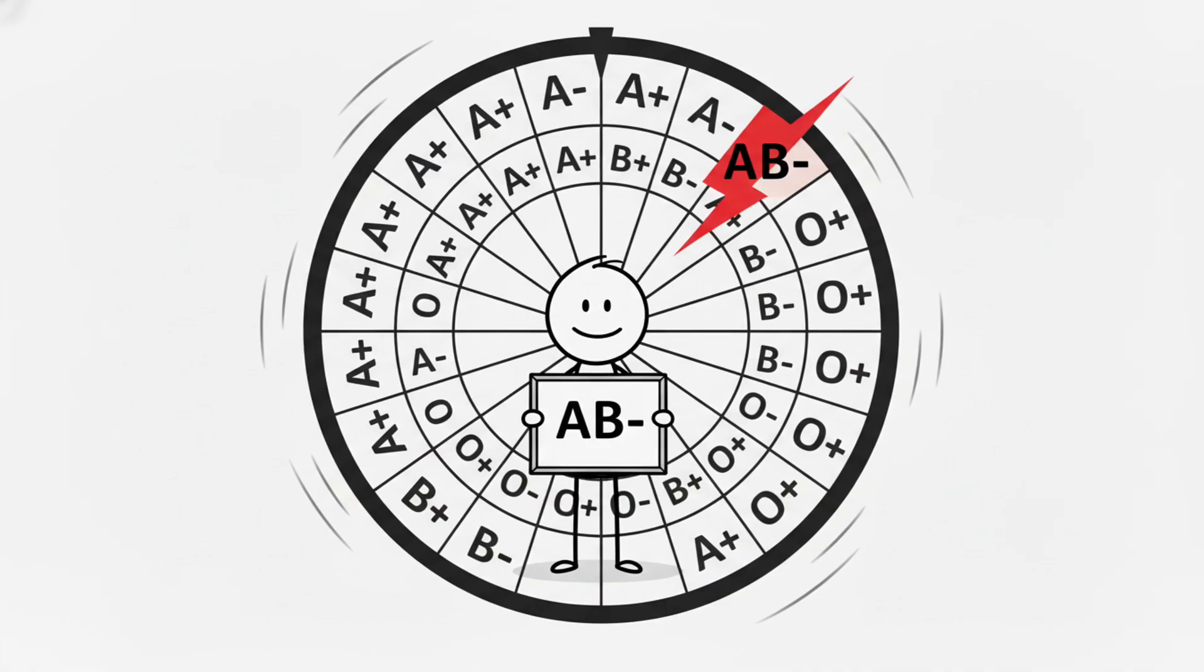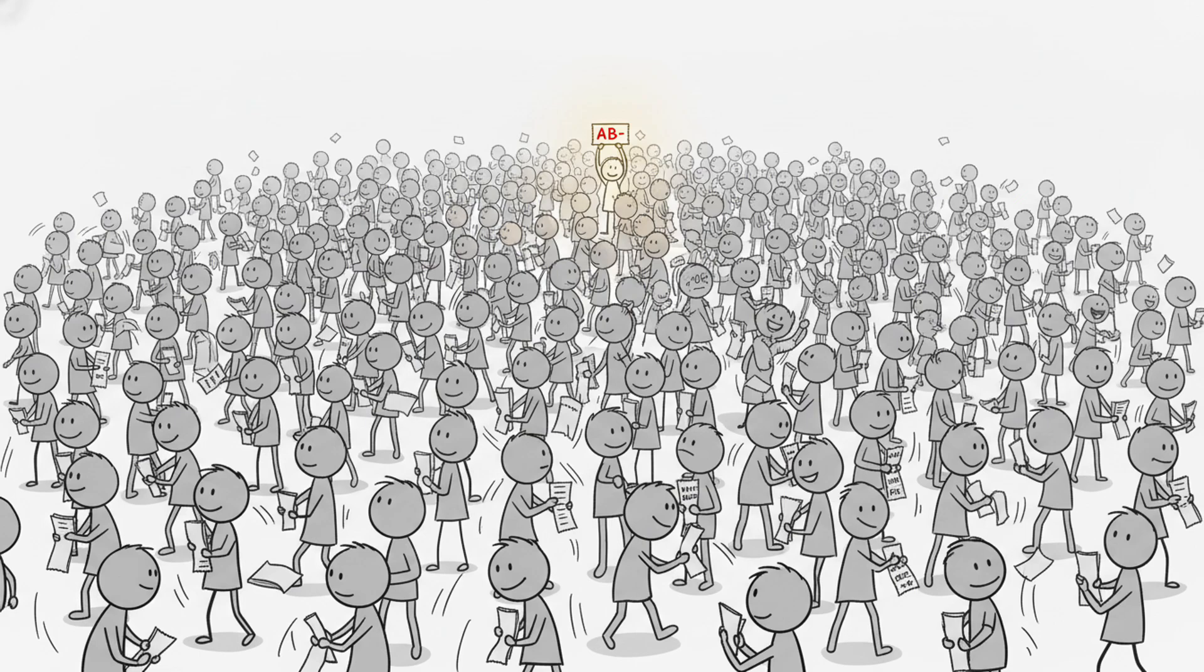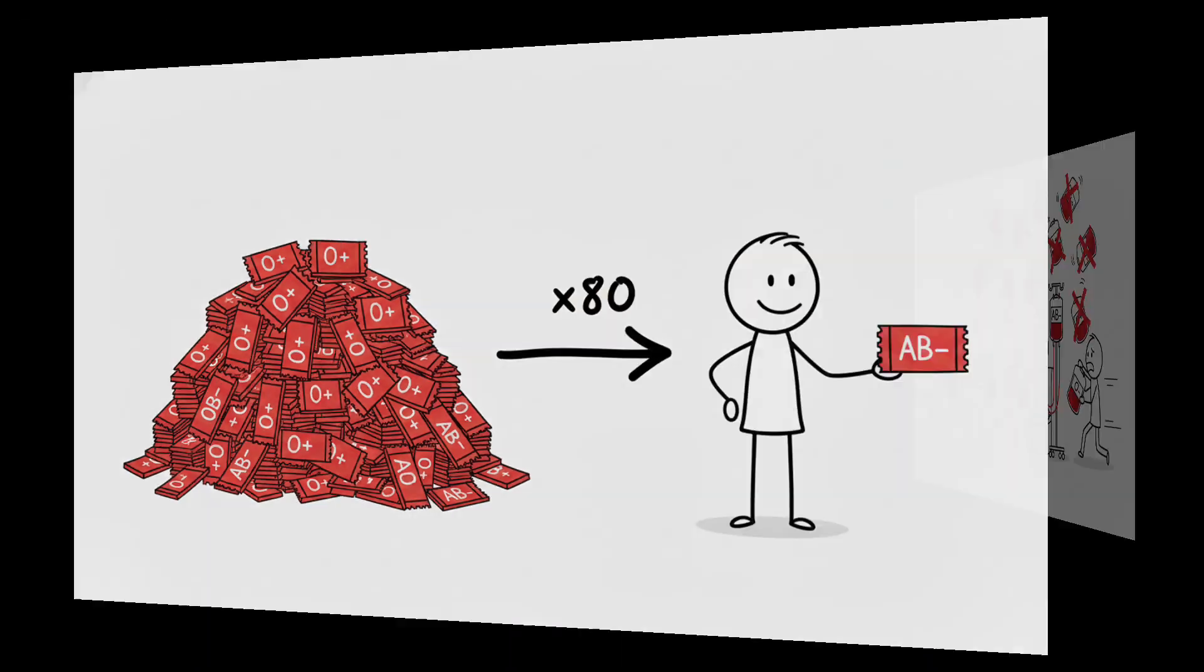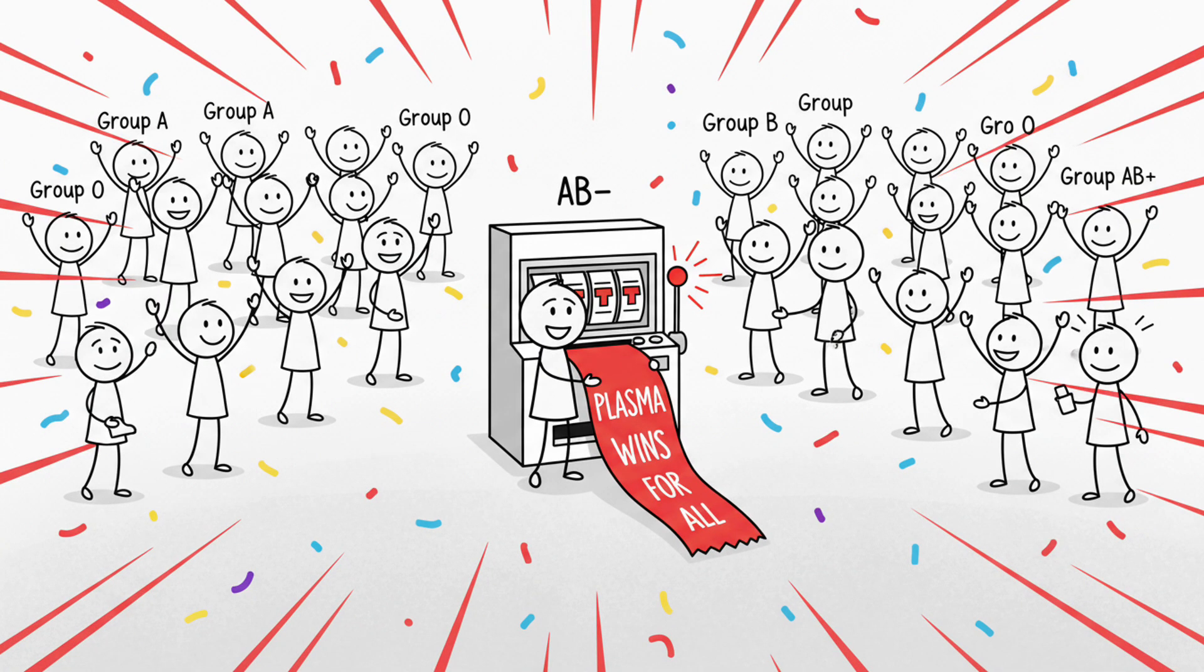AB negative. AB negative is not just rare. It's a statistical ghost. Less than 0.5% of people have it. You are more than 80 times less common than O-positive. You can only receive red cells from AB negative, A negative, B negative or O negative donors, an impossibly small group.